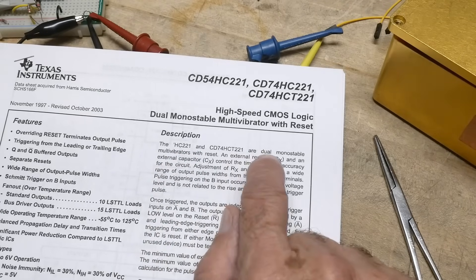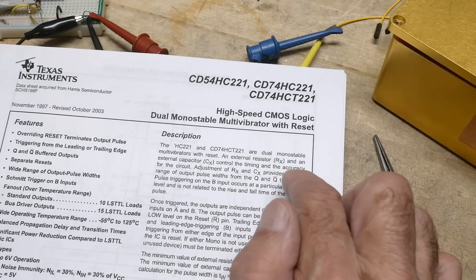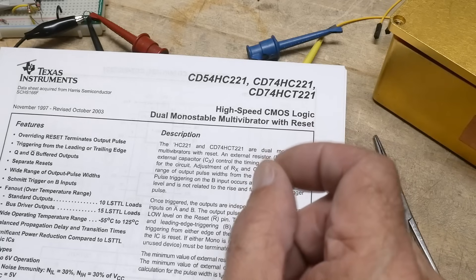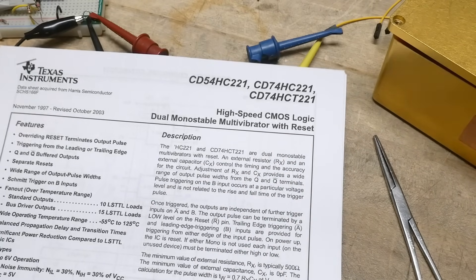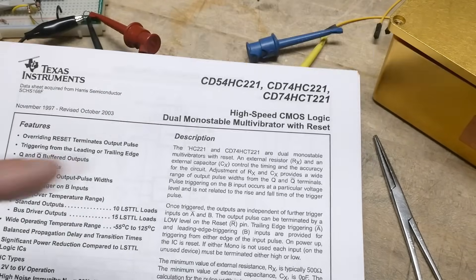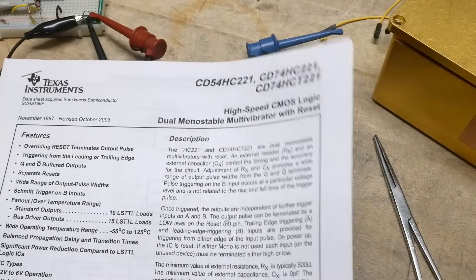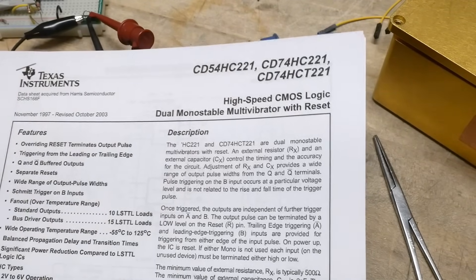Let's see here. It says dual monostable multivibrator with reset, external resistor and capacitor. It's just a simple RC that sets the width of the pulse once triggered. So it is an HC series part, which is nice. I think it's fairly rare. I think most people would use the 123 or the 121 or something like that, but 221.